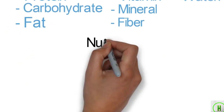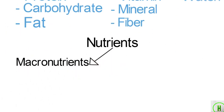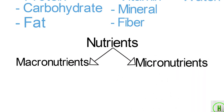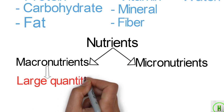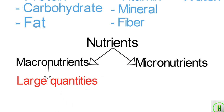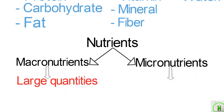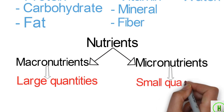Nutrients are divided into two classes: macronutrients and micronutrients. Macronutrients are nutrients we need in relatively large quantities. Micronutrients are nutrients we need in relatively small quantities.